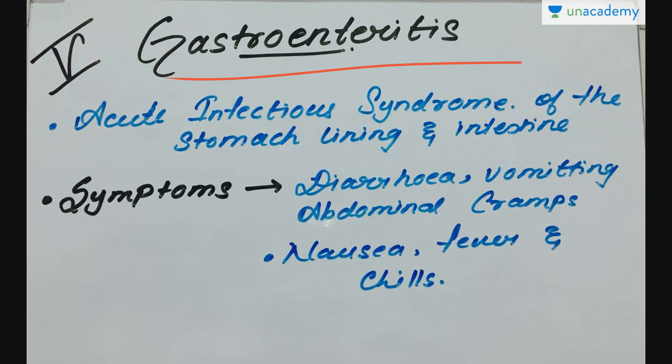Gastroenteritis is an acute infectious syndrome of the stomach lining and the intestine, characterized by diarrhea, vomiting, and abdominal cramps. Other symptoms include nausea, fever, and chills. The severity varies from a sudden but transient attack of diarrhea to severe dehydration.